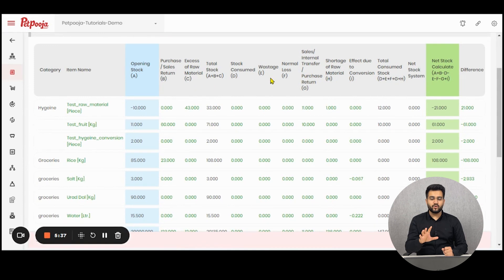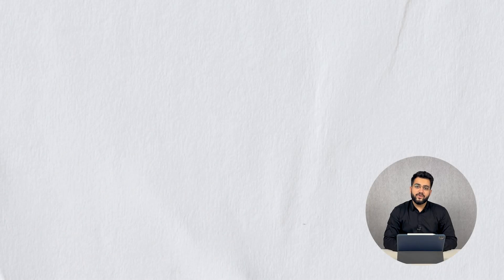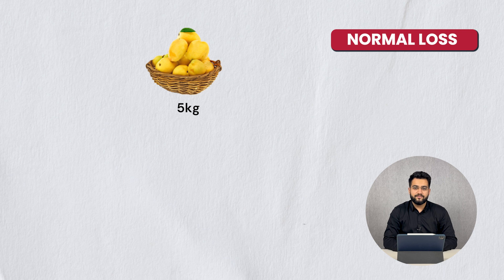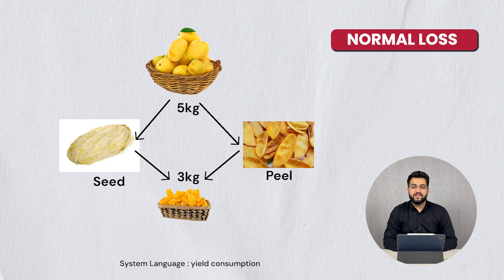If any raw material got expired, you can go to expired reports and add them to wastage. After wastage there is normal loss. We will take the example of yield consumption. Let us take an example of a mango where we have purchased 5 kgs. From these 5 kgs, after removing the peels and the seeds, we are left with 3 kgs of mango pulp. This is known as yield consumption. Inside the Paid Puja system, we call it normal loss percentage.